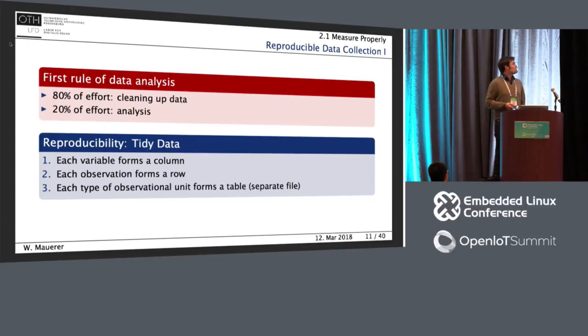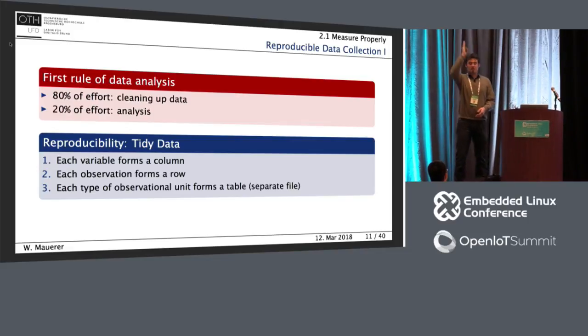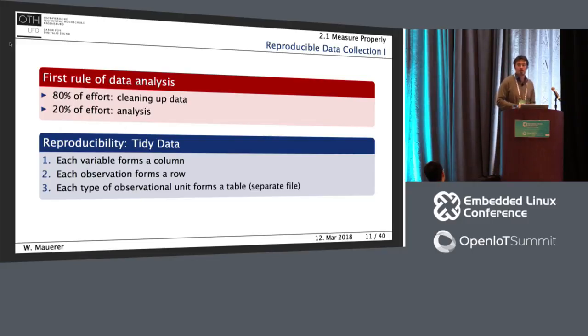How do you produce reproducible data in a tidy form? Three simple rules. Whatever you measure, whatever variables you measure, each variable forms a column, one single column. Rule number two, each observation for a column forms one row. And each type of observational unit forms a table, or in one file.